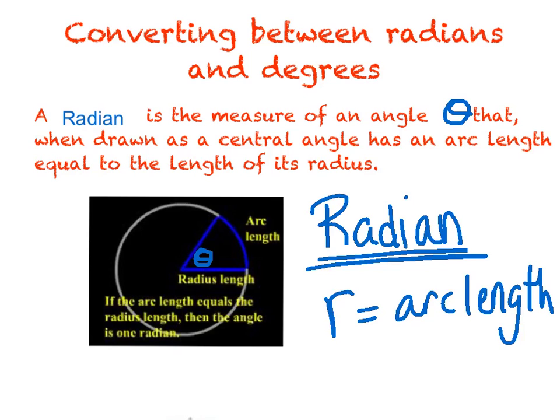So if this radius equals this arc length, we have one radian.